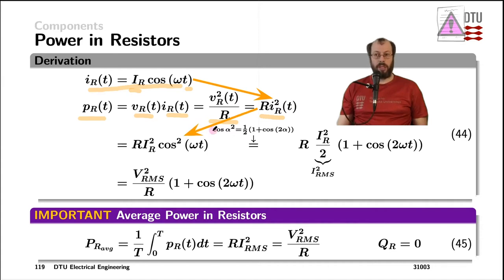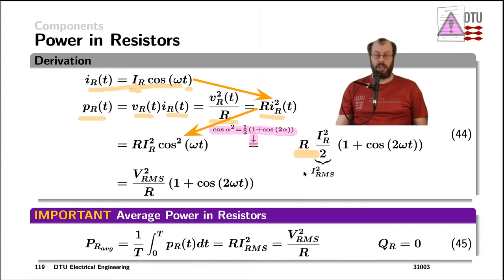Now, looking up an expression in a math textbook for the cosine squared of an angle alpha, we can see that cos²(α) is equal to one half times one plus the cosine of twice the angle alpha. Applying that trigonometric function to our case here leads to the power being expressed as the resistance times the square of the RMS current.